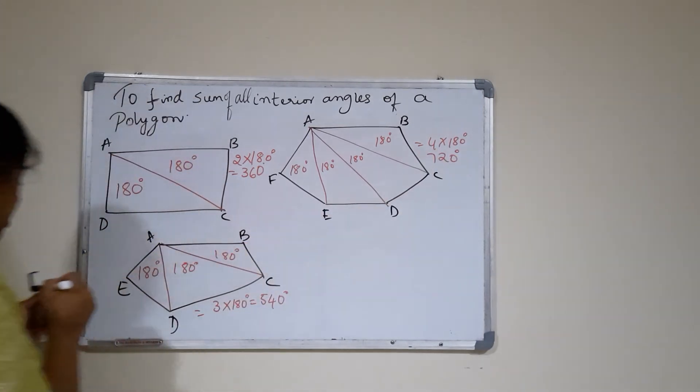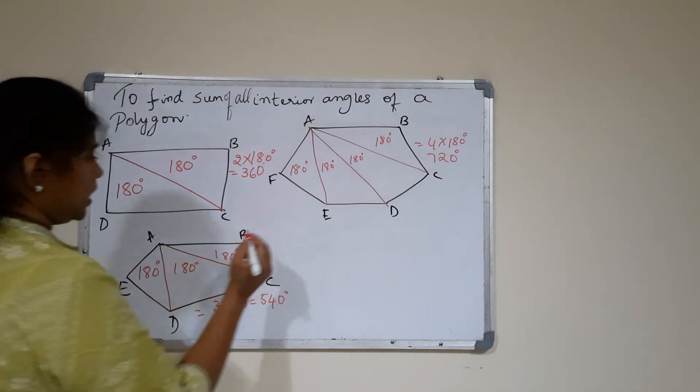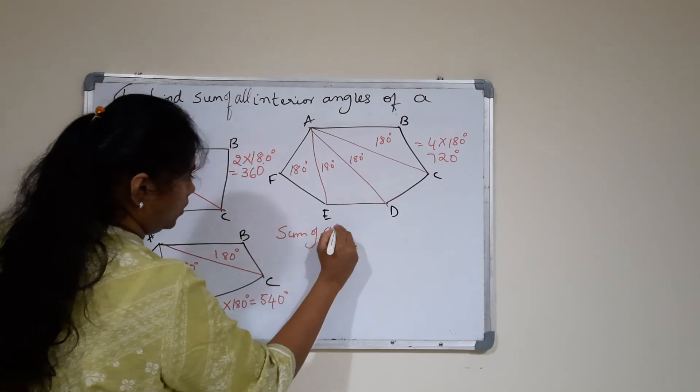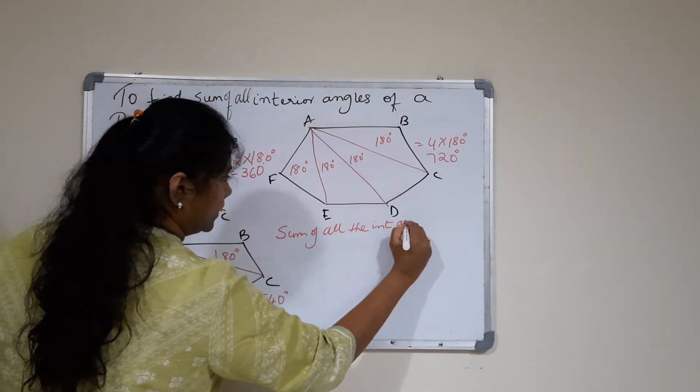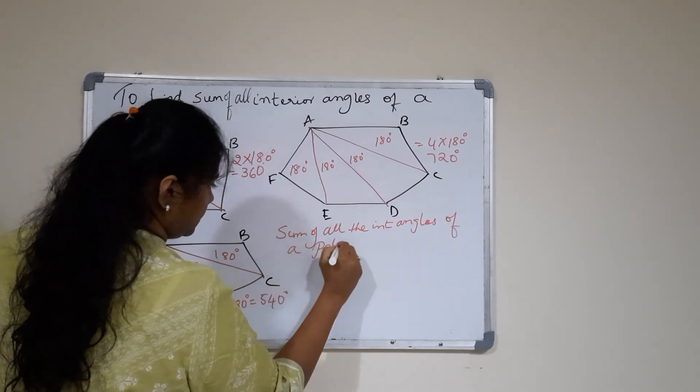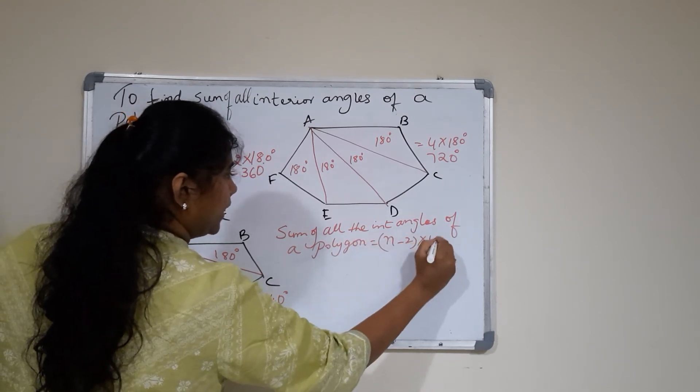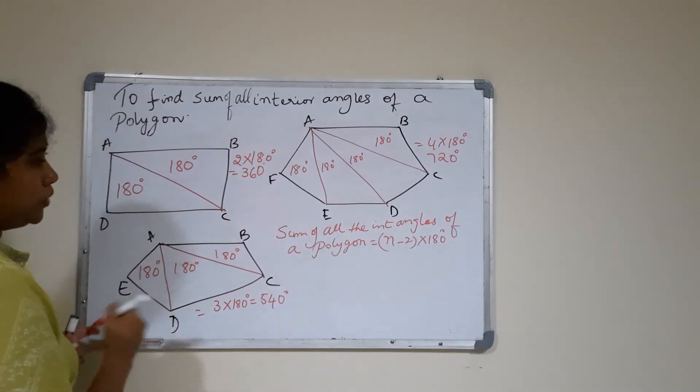But this is a very tedious process if bigger figures are given because we have to draw the diagonals and see how many triangles are formed. So I have got a very simple formula to find the sum of all the interior angles of a polygon. That is: sum of all the interior angles of a polygon is equal to n minus 2 into 180 degrees. This is the formula which you need to remember.